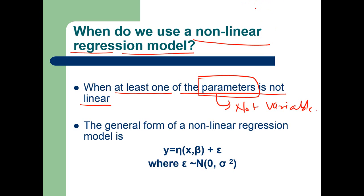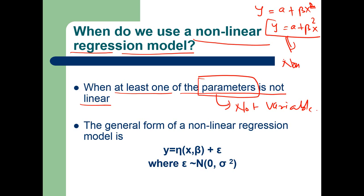Let us give an example. Consider y equal to beta x squared versus y equal to a plus beta squared times x. Here, beta x squared is the nonlinear regression model because beta squared is considered nonlinear, whereas in the other model both parameters a and beta are linear in nature — making it still a linear regression model.